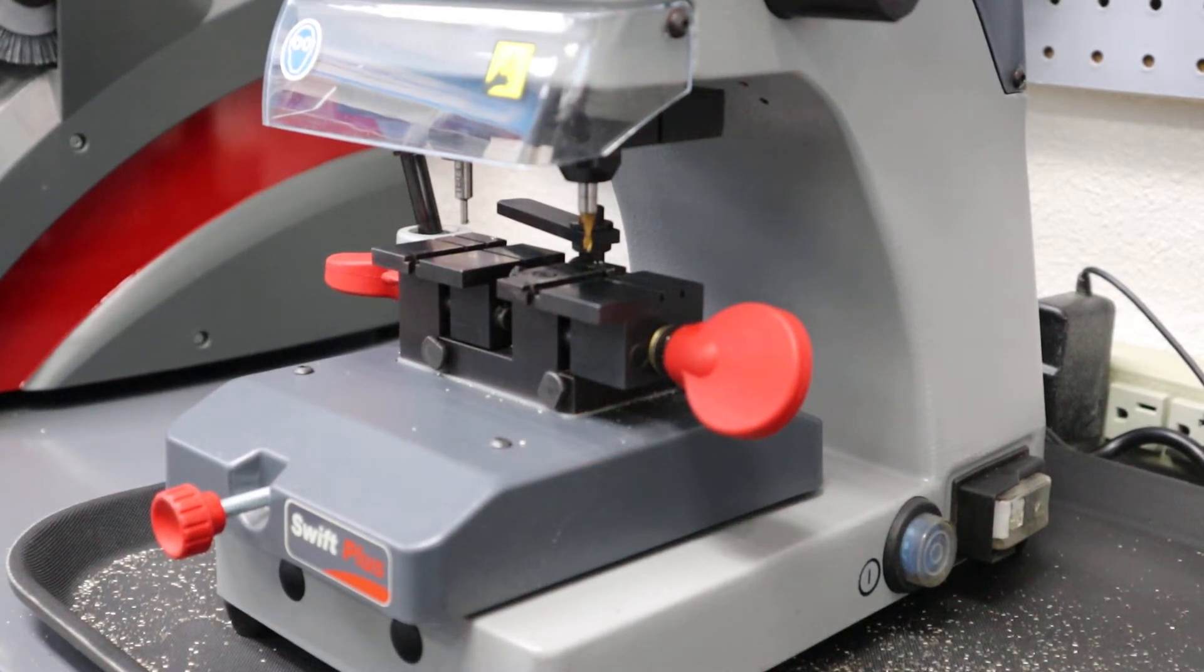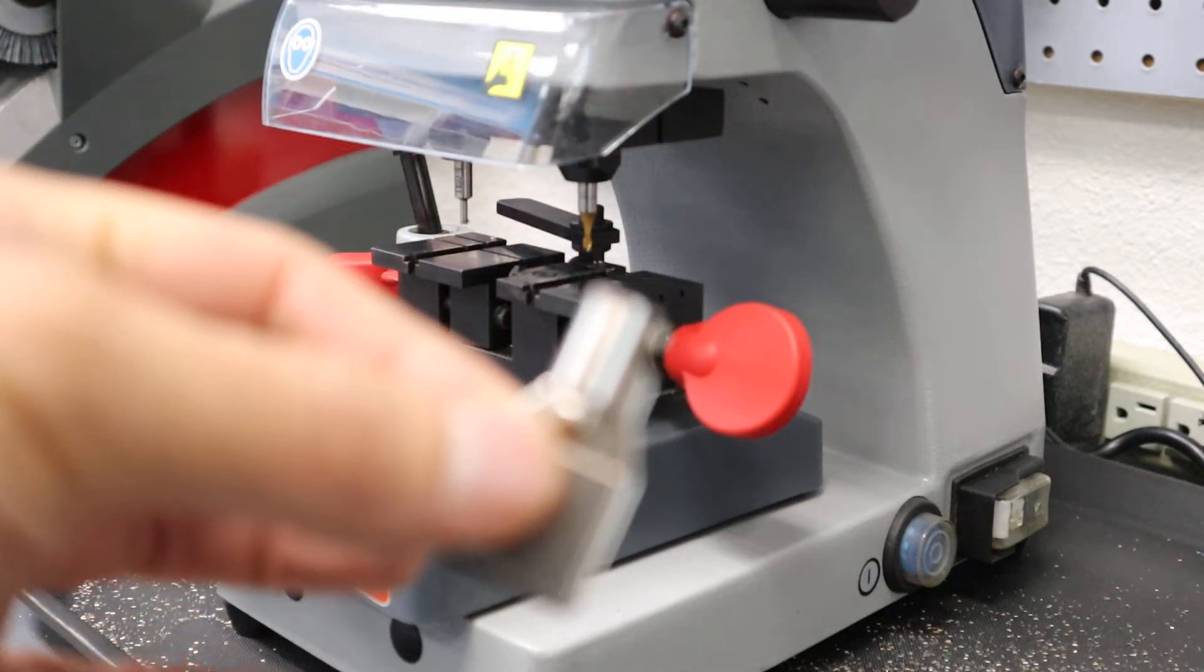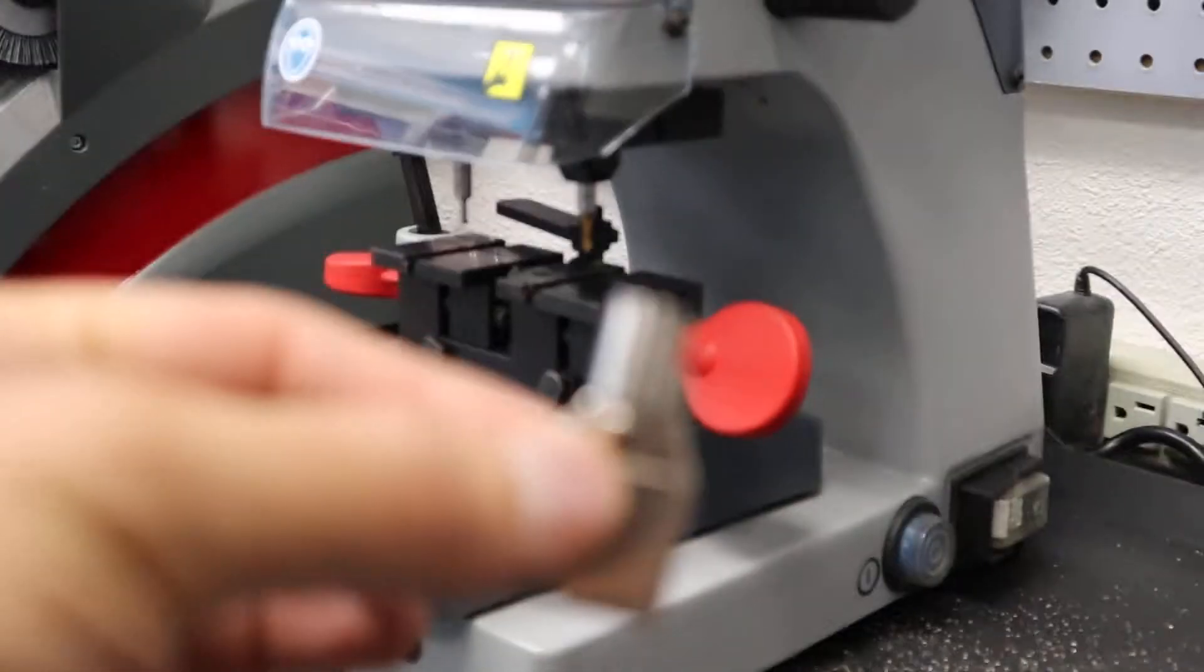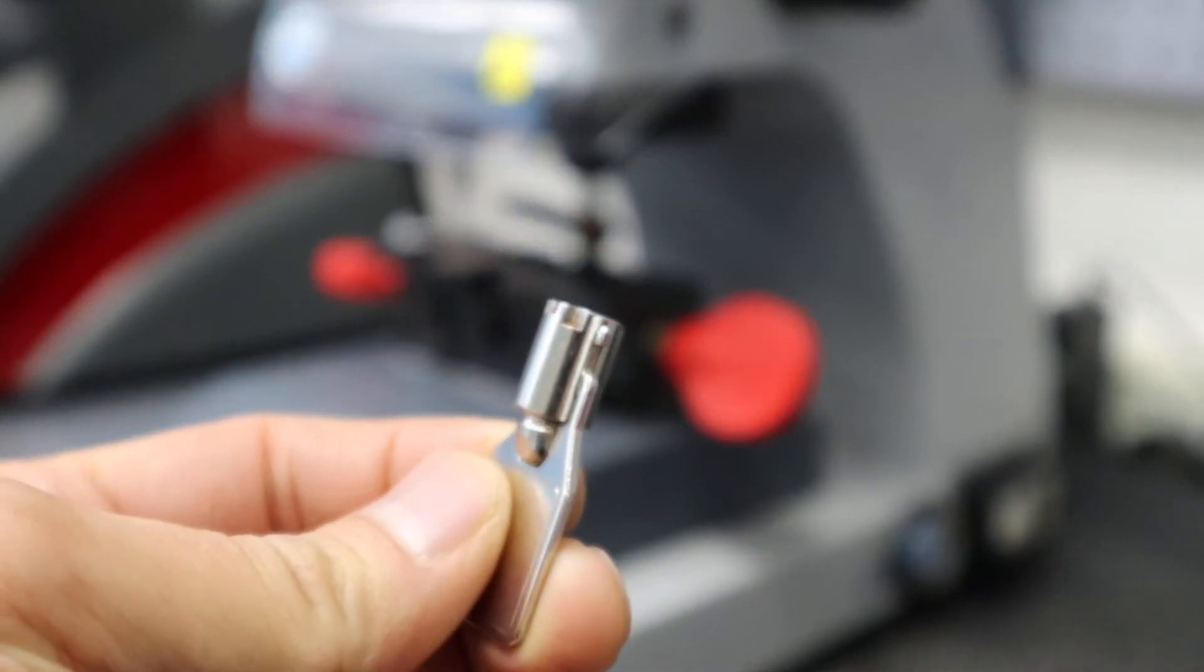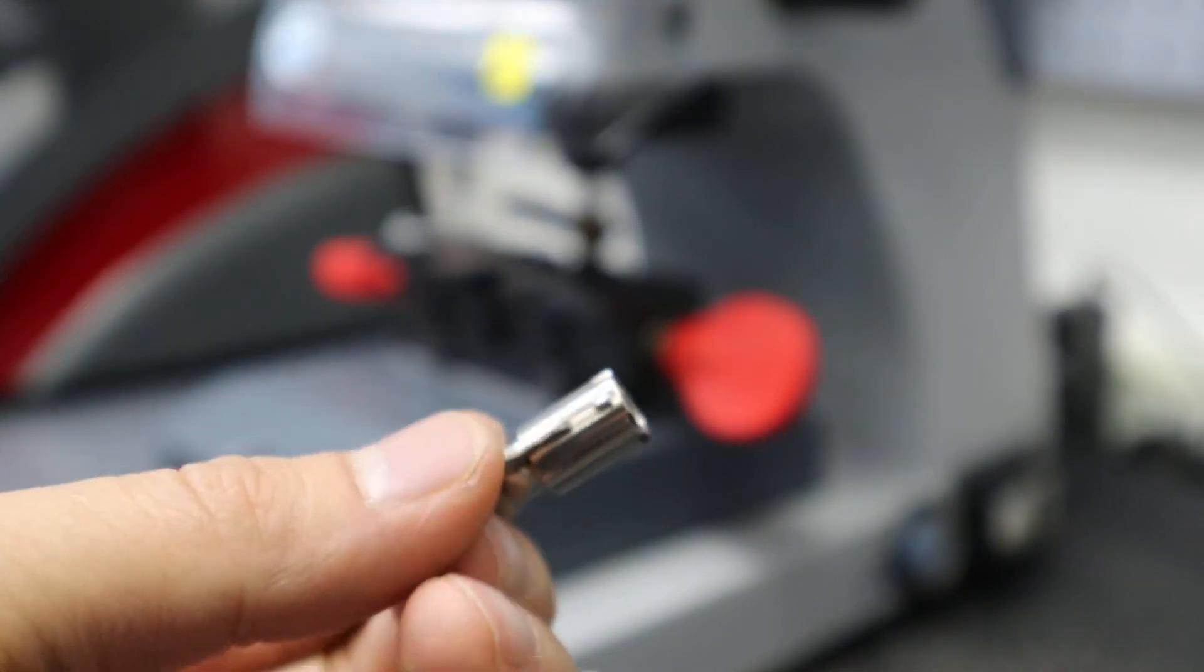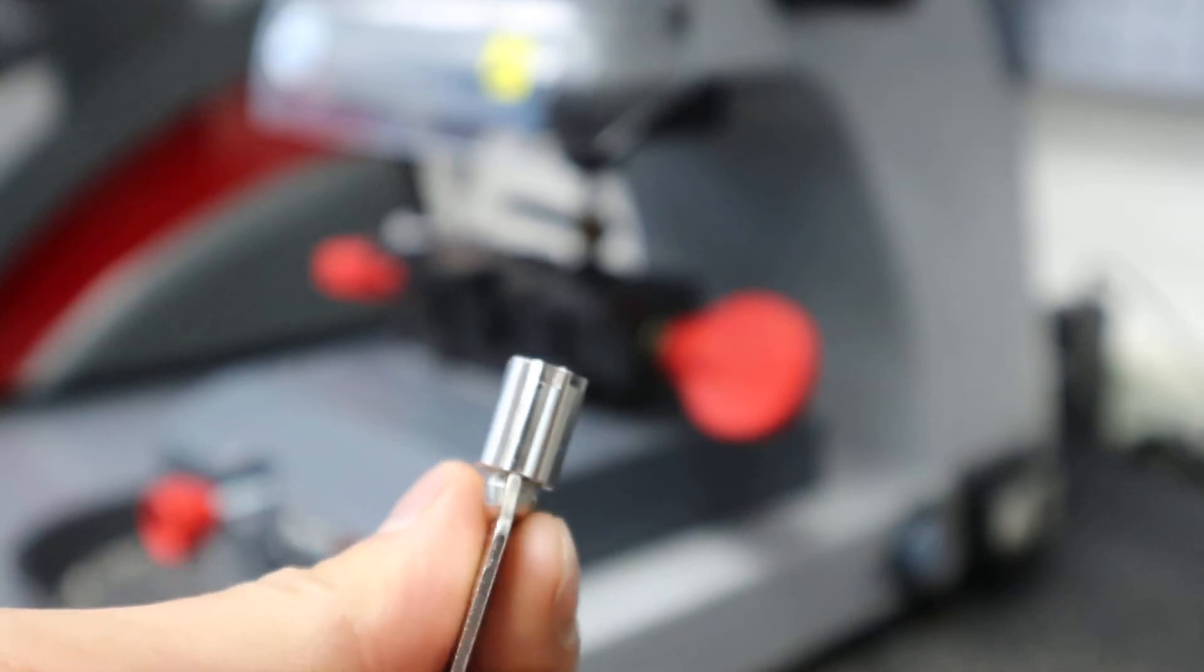Okay, next type of key that I'm going to show you how to cut is a tubular key. Let's get into focus—a tubular key right here. If you notice, the cuts are on the outer rim of the circle.